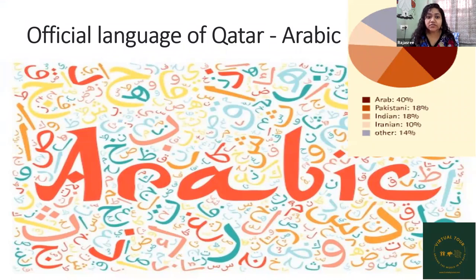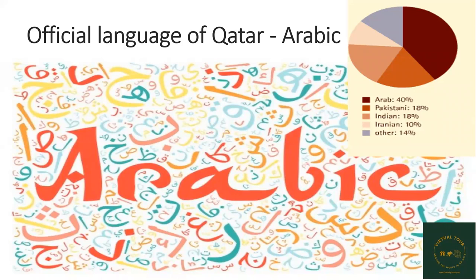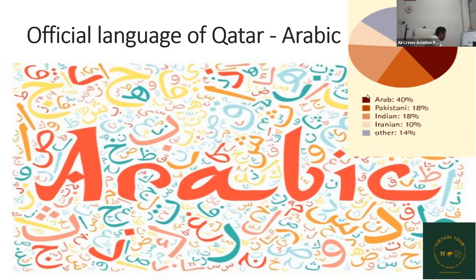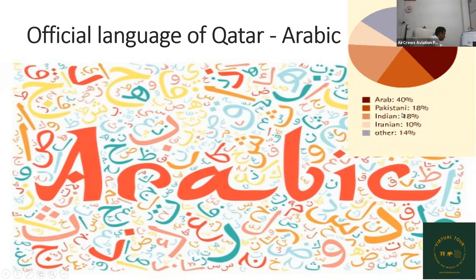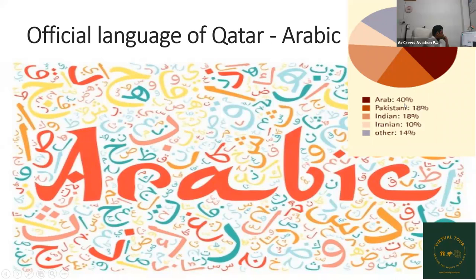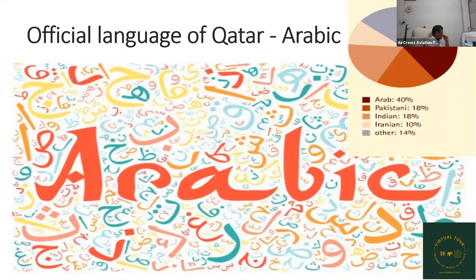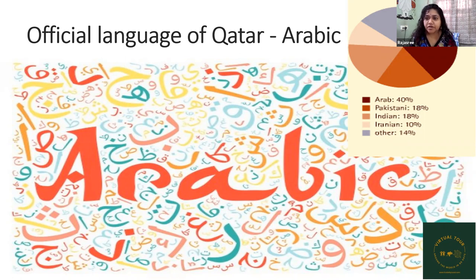The official language of Qatar is Arabic. In this pie chart we can see all the various languages spoken in Qatar. While some people do speak English, it is not the regional language. Qatar is mainly an Islamic state, and in the Middle East people usually speak Arabic, Iranian, or other Islamic languages. The languages spoken include Arabic, Pakistani languages, Indian languages, Iranian, and 14% other — but mainly it's Arabic.